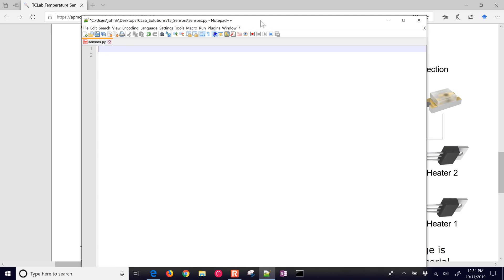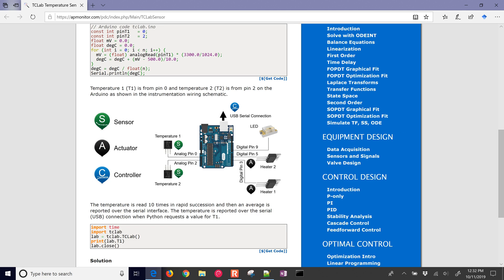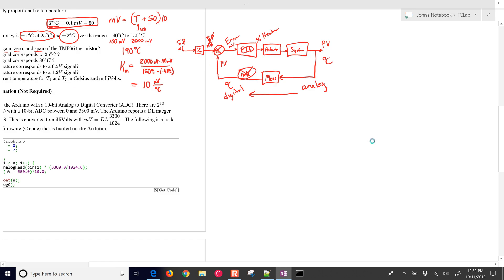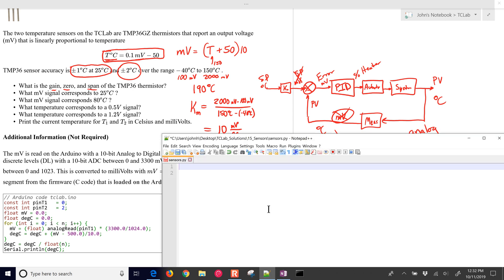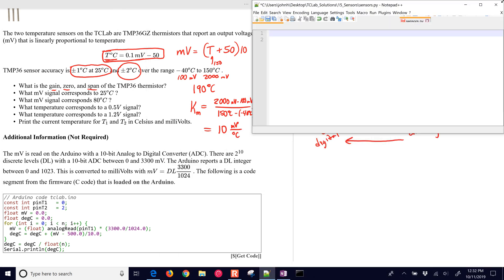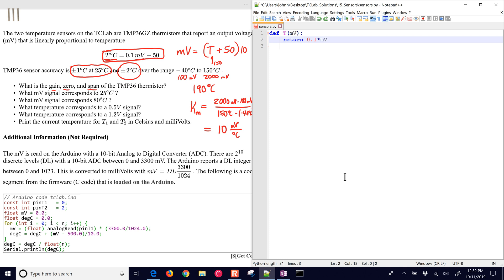Let's answer the remainder of the questions now. What millivolt signal corresponds to 25 degrees Celsius? I'm going to create a program here that's going to help us answer these questions. First of all, define a function. This is going to be our temperature as a function of millivolts, and we'll return 0.1 times millivolt minus 50. And then we'll do another one, temperature to millivolts, and we'll return temperature plus 50 times 10.